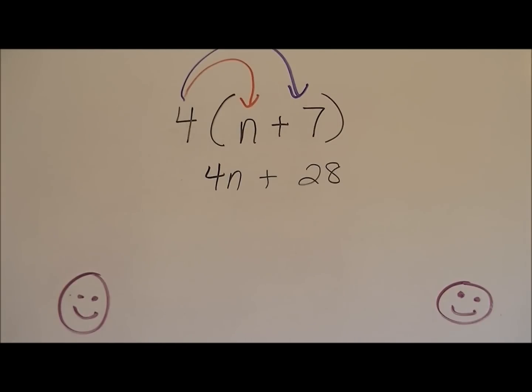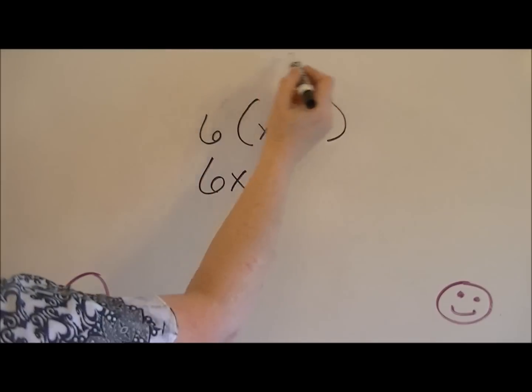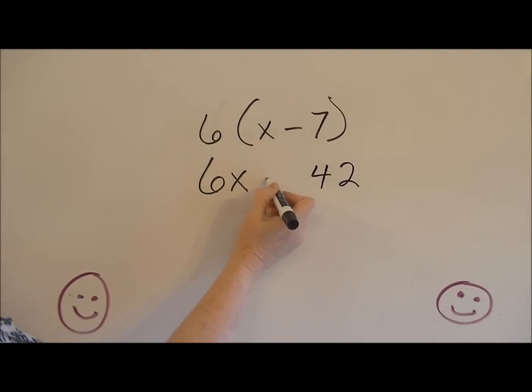Let's look at another one that's just a little bit harder. We have this problem. We're going to multiply the six times the x, which would be 6x. And now we're going to multiply the six times the seven, which is 42. And I'm going to drop the minus sign down between them. So the answer is 6x minus 42.